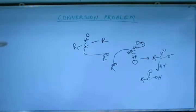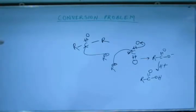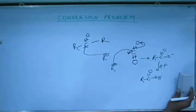This becomes an important method of preparation of carboxylic acid, which we will revisit in the chapter on carboxylic acids. So this is a reaction we must be aware of. When Grignard reagent reacts with CO₂, it produces a carboxylate, and on subsequent protonation we get carboxylic acid.